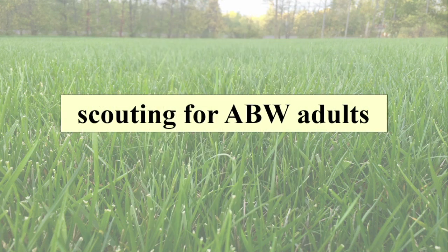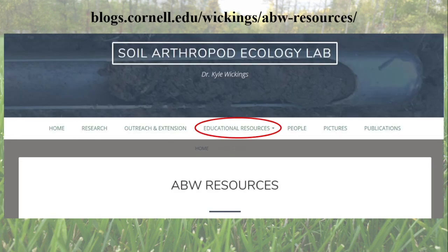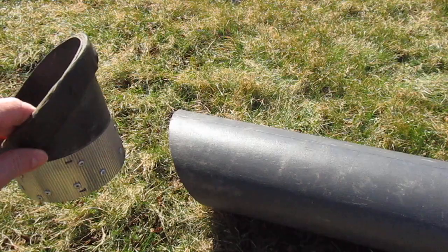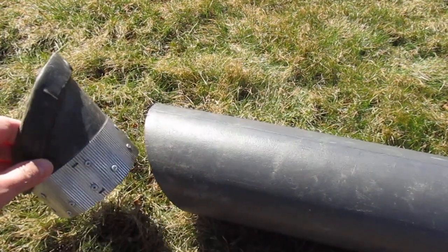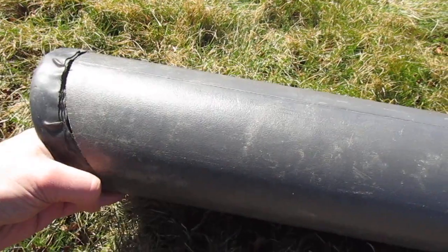Now let's move on to the scouting procedure. Before using your vacuum sampler, you'll need to build a collection basket for the intake chute of the vacuum. Instructions for this can be found on our website at the following link. Once you have your collection basket installed and you've started your vacuum, you're ready to sample.